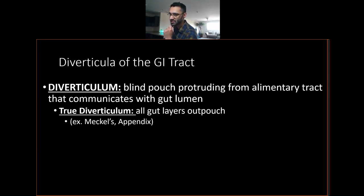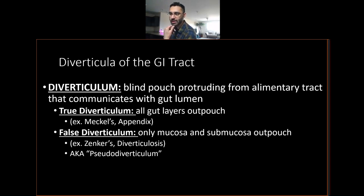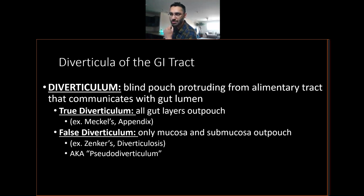A diverticulum is just describing an anatomical structure. If we have a true diverticulum, we also have false diverticulum. False diverticula have only your mucosa and submucosa coming out. Hopefully you remember talking about Zenker's diverticula from last week's upper GI pathology. These are also known as pseudodiverticula.